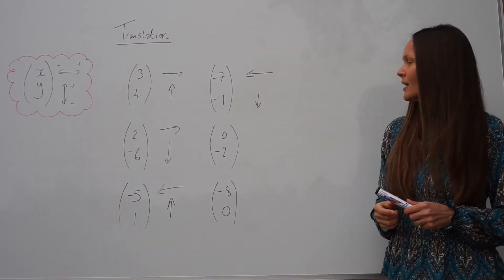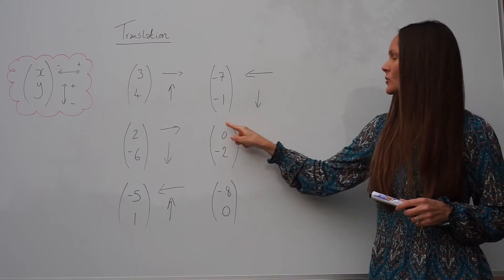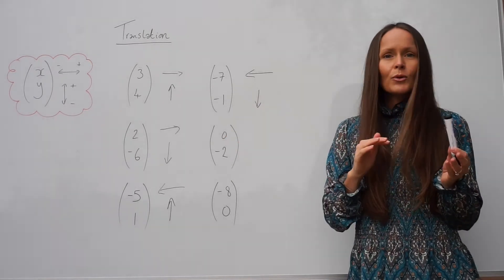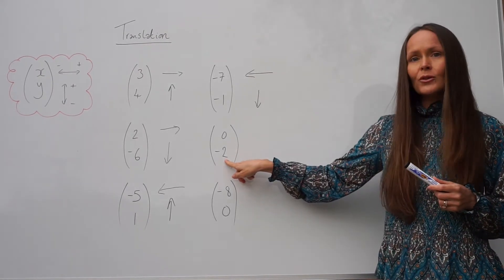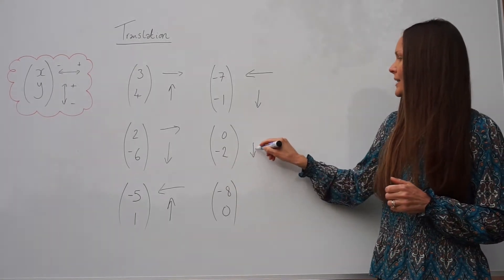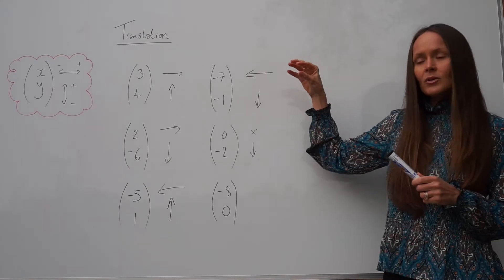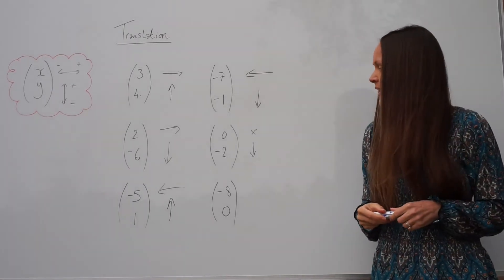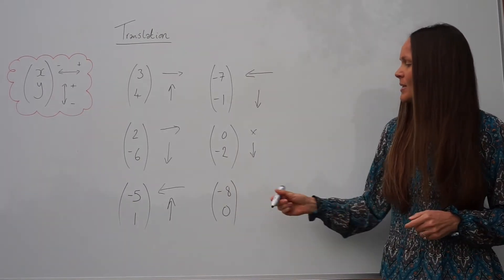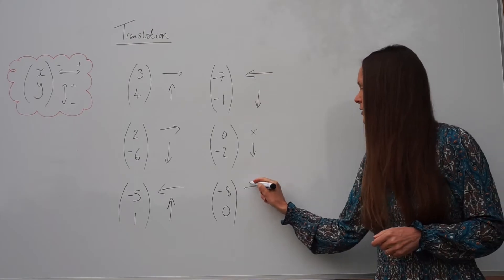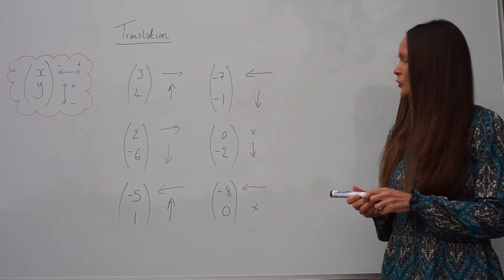Next we have a zero on top. A zero on top means the shape doesn't move left or right — it only moves two units down, so just draw the new shape two units below where it was. For the last example, zero is underneath, so the shape doesn't move up or down, but it moves eight units to the left — the new shape is drawn eight units to the left.